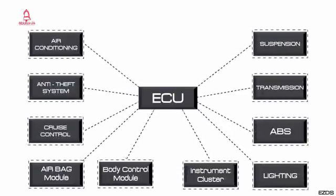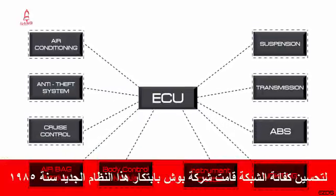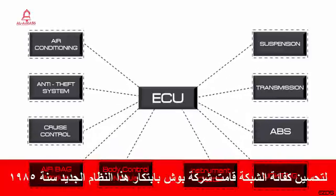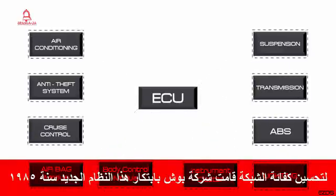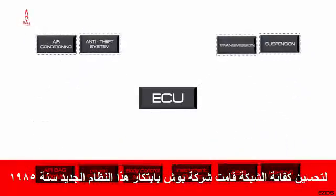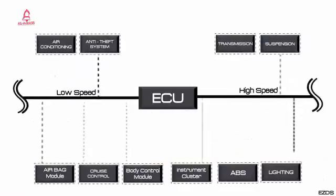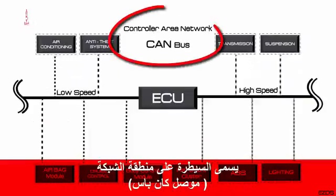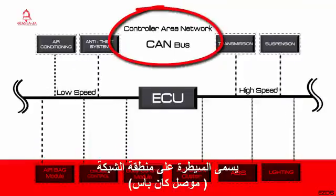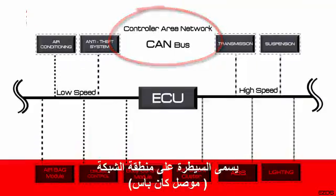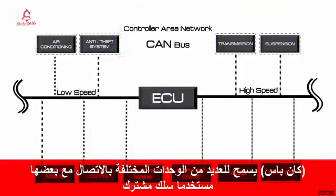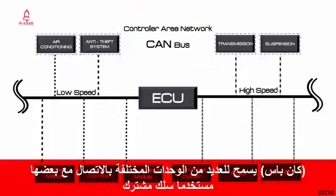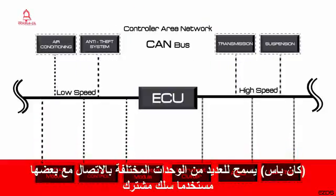In order to optimize the efficiency of the network, Bosch came up with a new protocol in 1985 called Controller Area Network. CAN allows different modules to communicate with each other using a common cable.